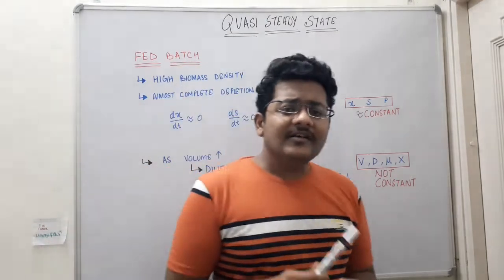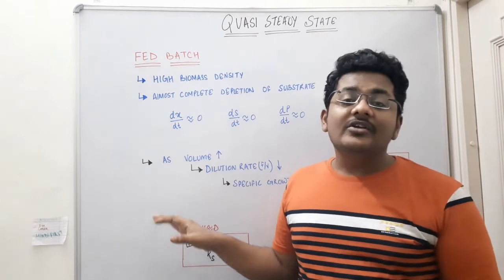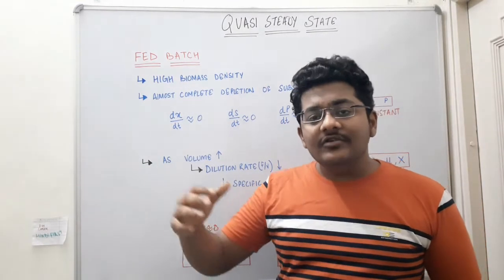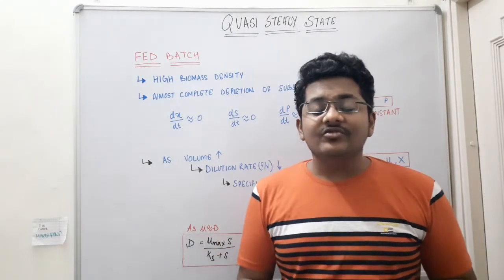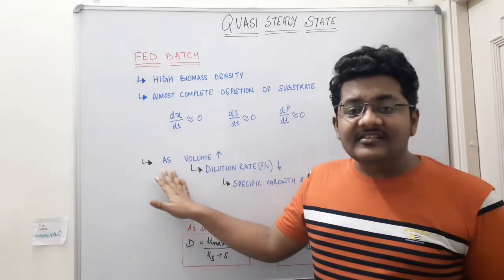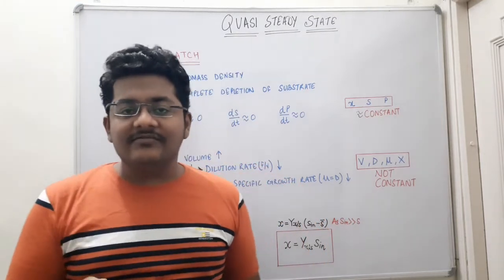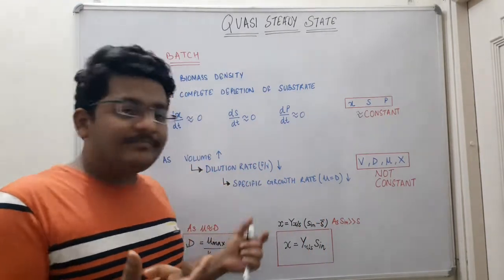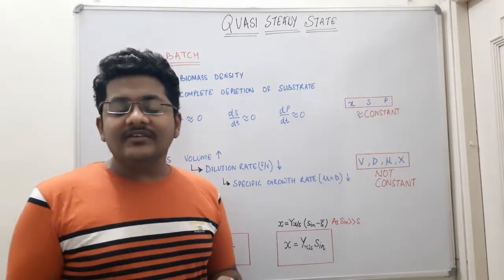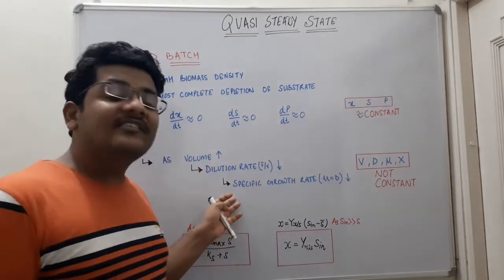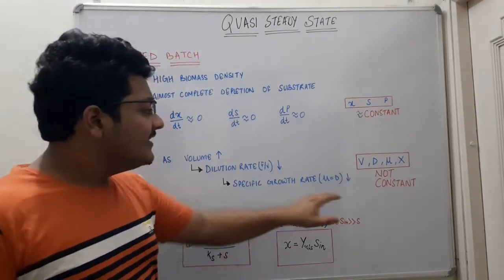One important thing about quasi steady state is that there is a change in volume. The volume does not remain constant because there is an inflowing medium but no removal of substances — in fed batch culture, there is only addition of nutrients but not removal. So there is an increase in volume. Since the dilution rate formula is D = F/V, if V increases, D decreases. And since at steady state mu equals D, the specific growth rate also decreases.